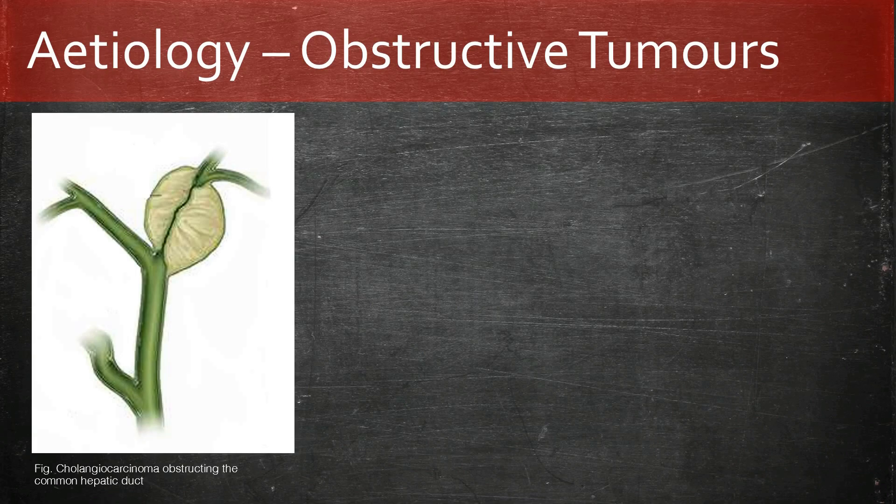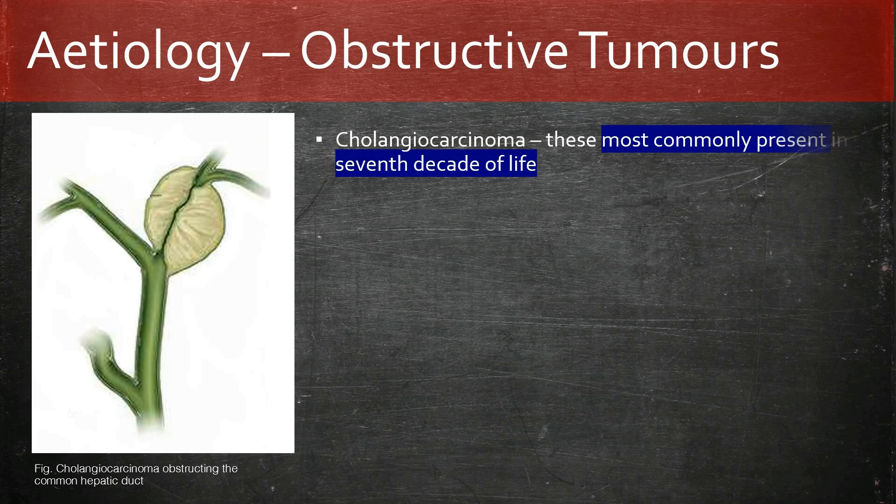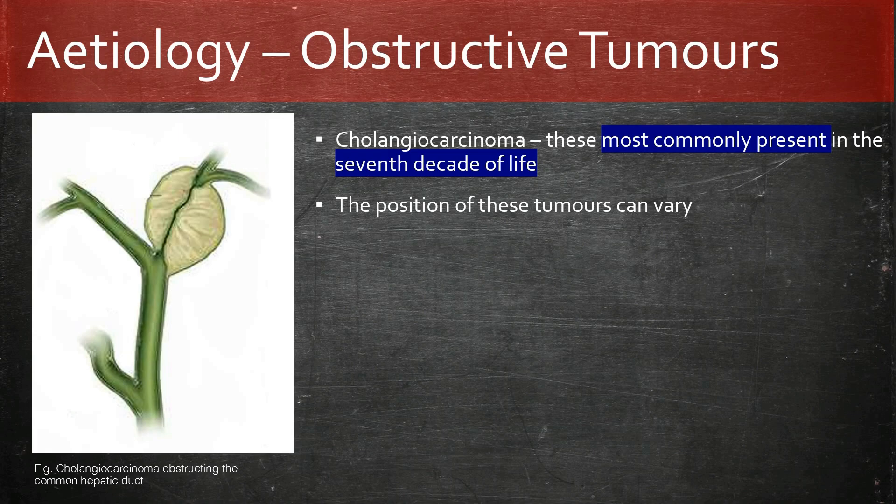Cholangiocarcinoma, as the name suggests, is a malignancy of the biliary system presenting most commonly in the 7th decade of life. Its position can vary and is split into intra-hepatic and extra-hepatic. Intra-hepatic sees the tumour presenting in the left and right hepatic duct, and extra-hepatic manifestations are split into hilar — which is pictured — and distal, which can present from the ampulla of Vater upwards.